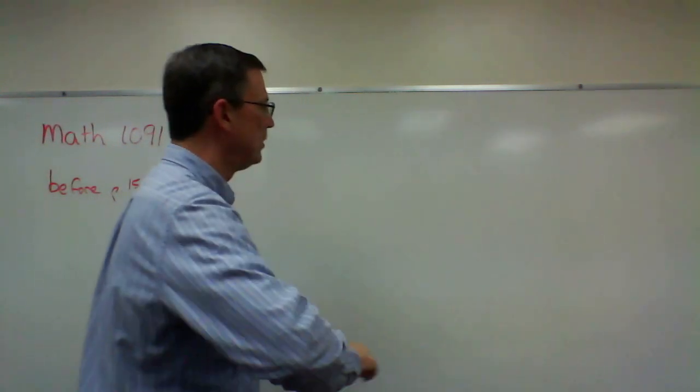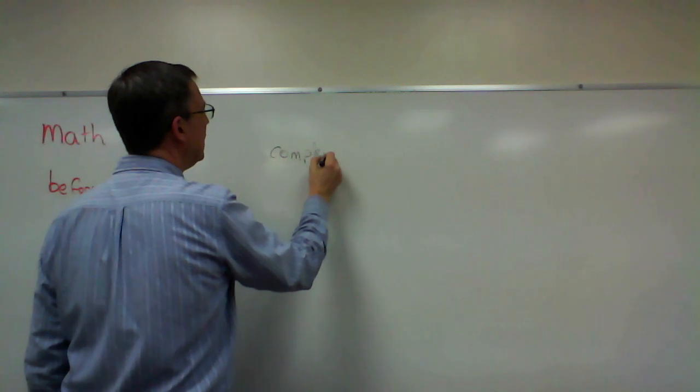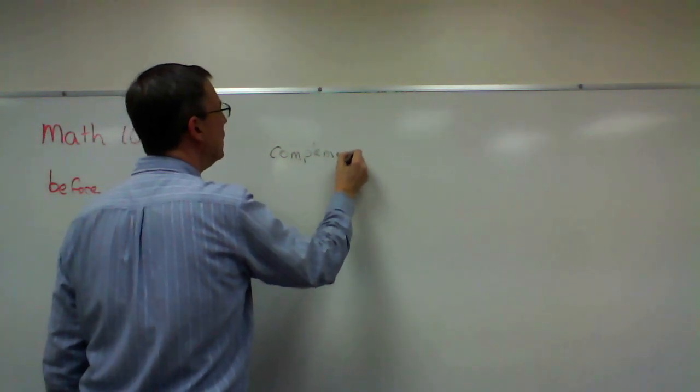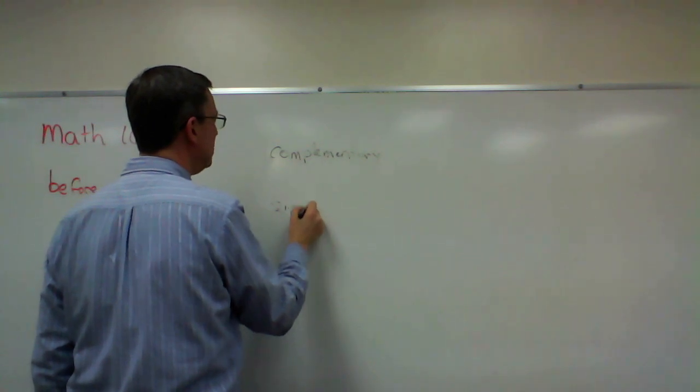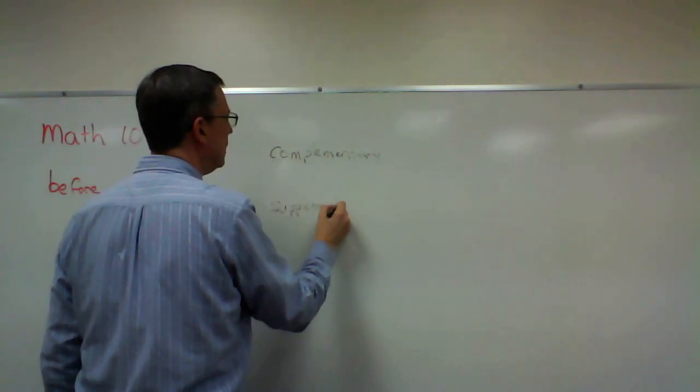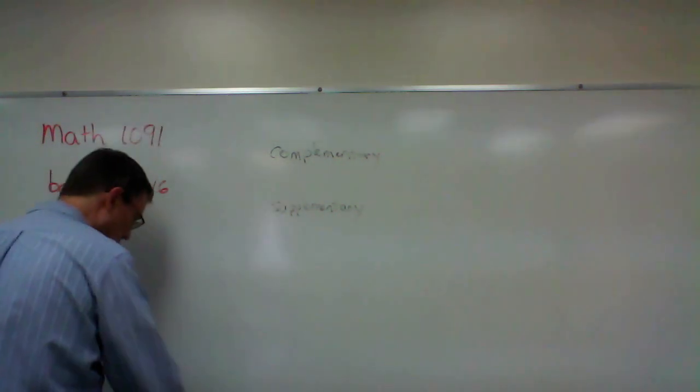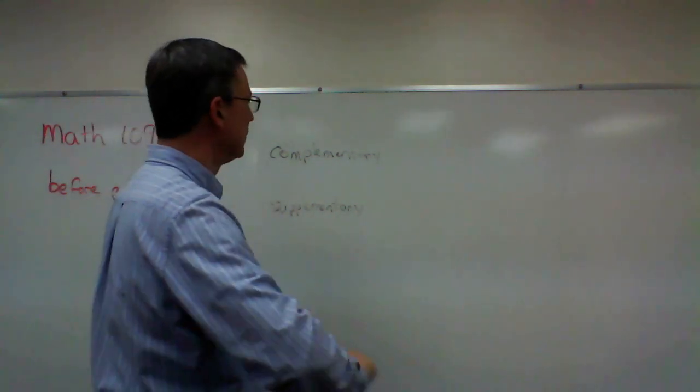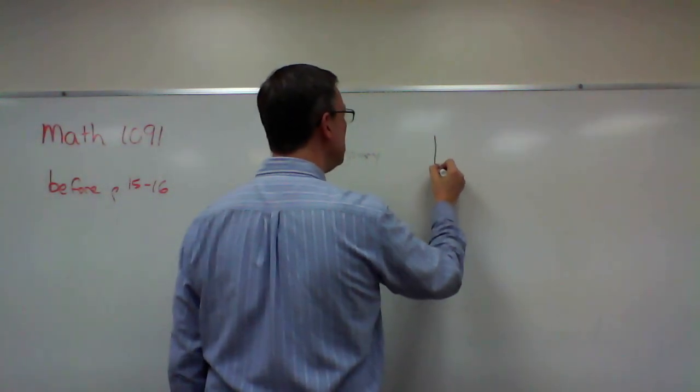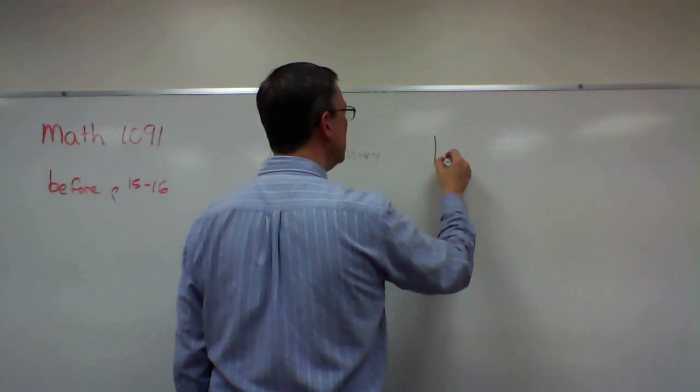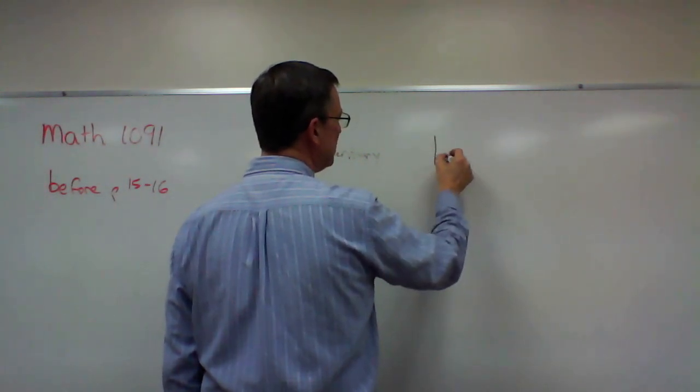My black is running out, so I'm gonna toss that over there. Complementary means two angles add up to be a 90 degree angle, so this angle plus this angle add up to be 90 degrees complementary.